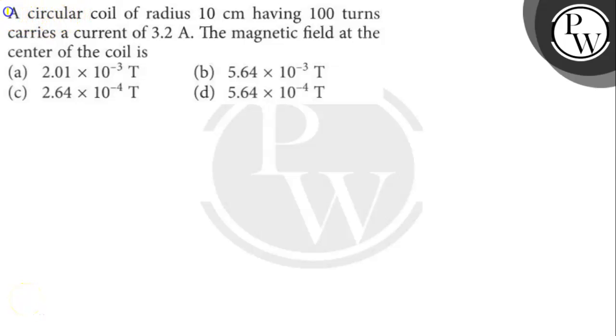The question says here: A circular coil of radius 10 cm having 100 turns carries a current of 3.2 Ampere. The magnetic field at the center of the coil is what?